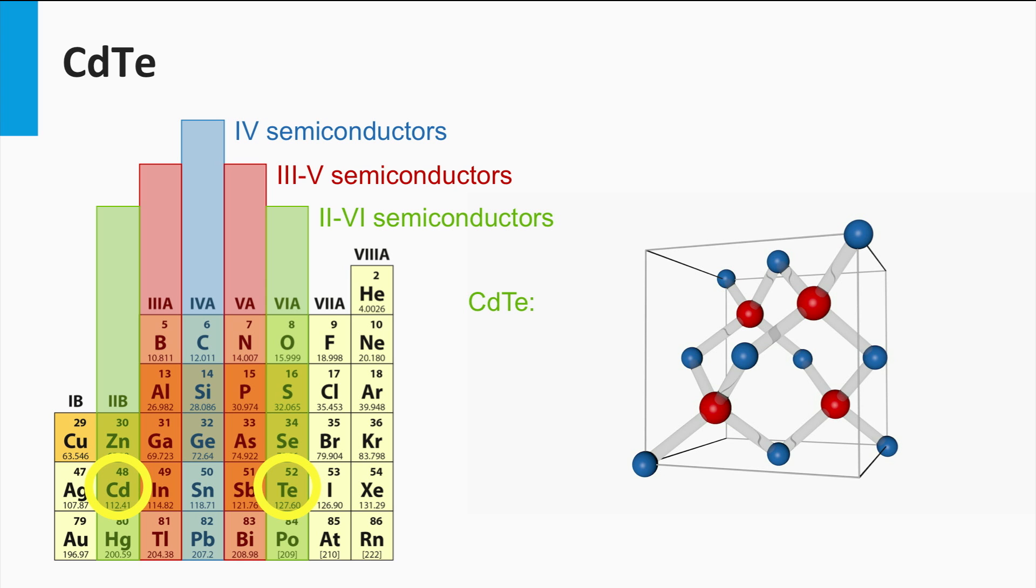The band gap of cadmium telluride is 1.44 eV, a value which lies within the optimal range of band gaps for a single junction solar cell. Cadmium telluride has a direct band gap. Consequently, only a few microns of cadmium telluride is required to absorb all the photons with an energy higher than the band gap.